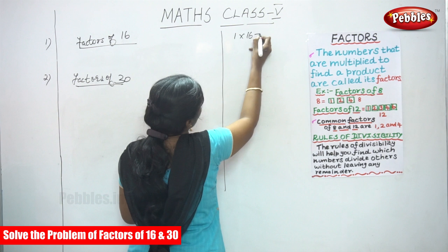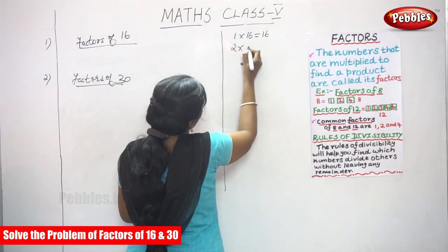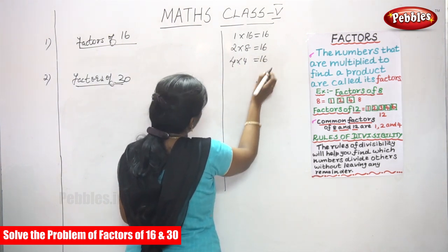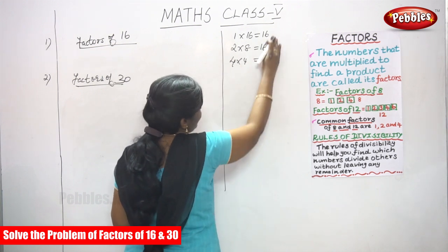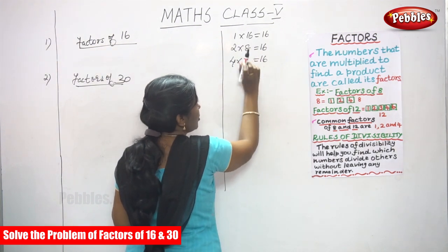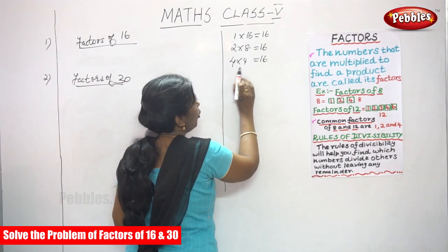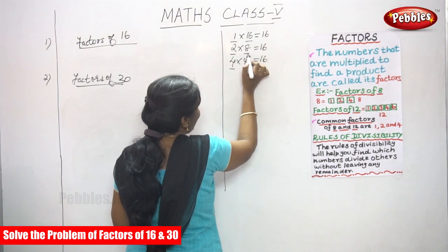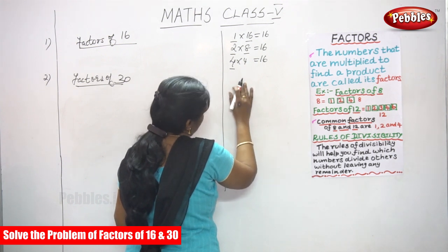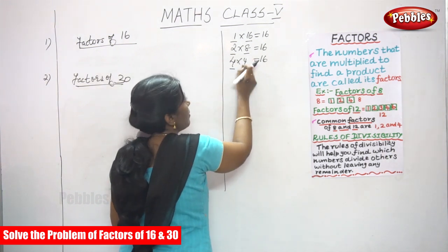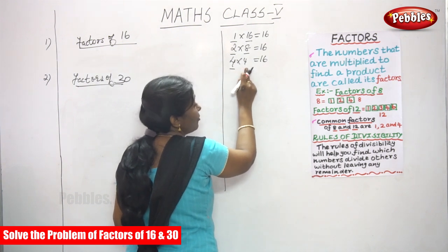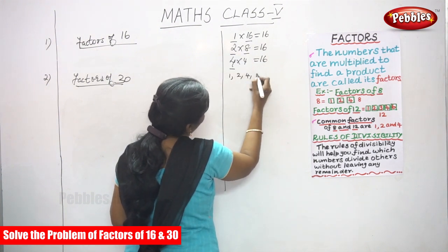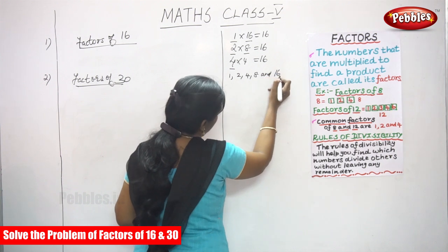2 into 8 you can get 16, and 4 into 4 you can get 16. So these are the possible factors: 1 into 16 is equal to 16, 2 into 8 is equal to 16, 4 into 4 is equal to 16. So now the factors are 1, 2, 4, 8, and 16. Note that 4 appears twice so we write it only one time.